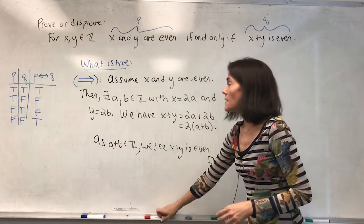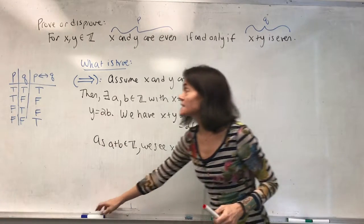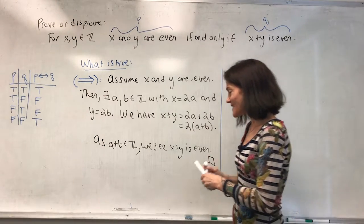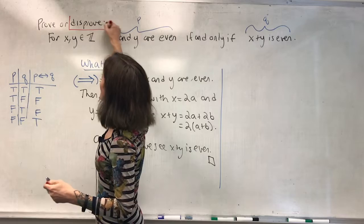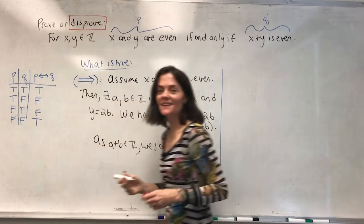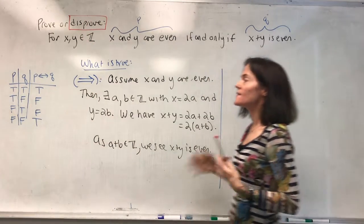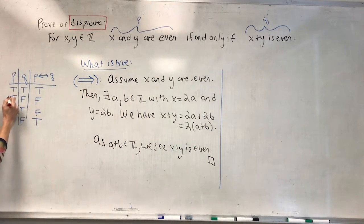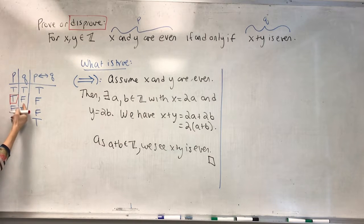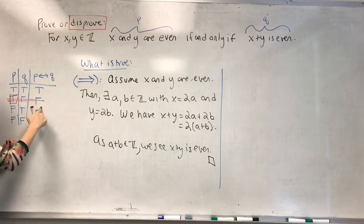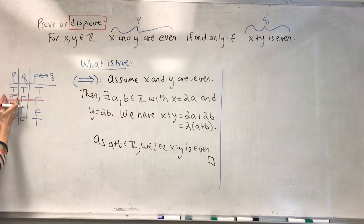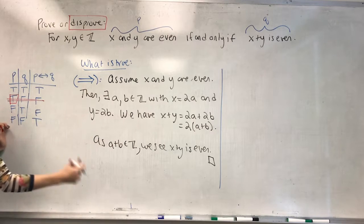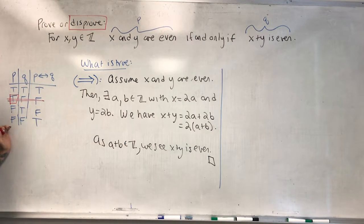As a plus b is an integer, we see x plus y is even. I'm putting my box because that's all I can prove. However, this direction does not prove the if and only if. In fact, I will box, we are disproving. What we know here, if you sort of go back to the truth table, is if this is true, this can't be false. So this case doesn't occur of the if and only if being false. If I assume p is true, it follows that q is true. That is what I just proved.